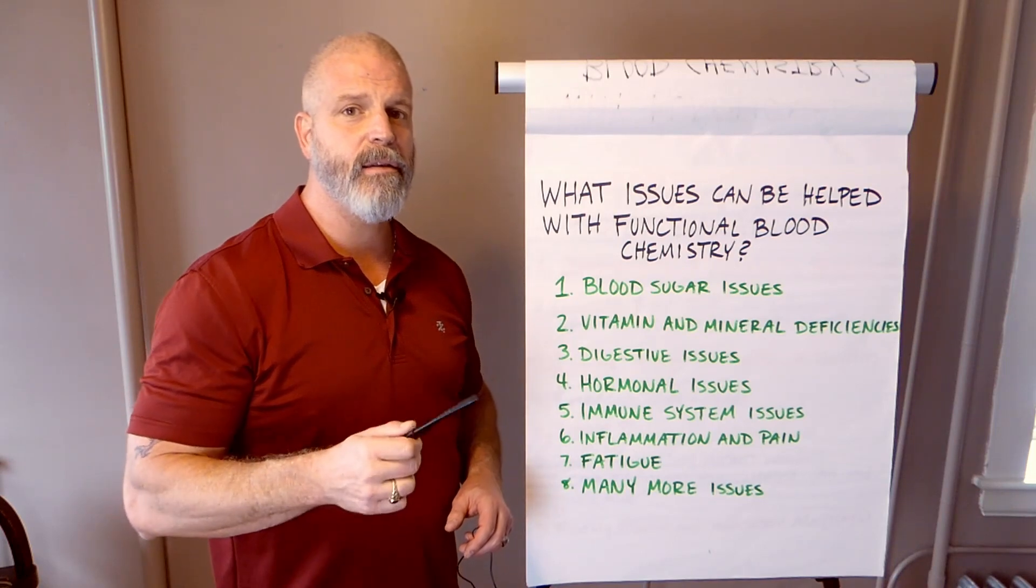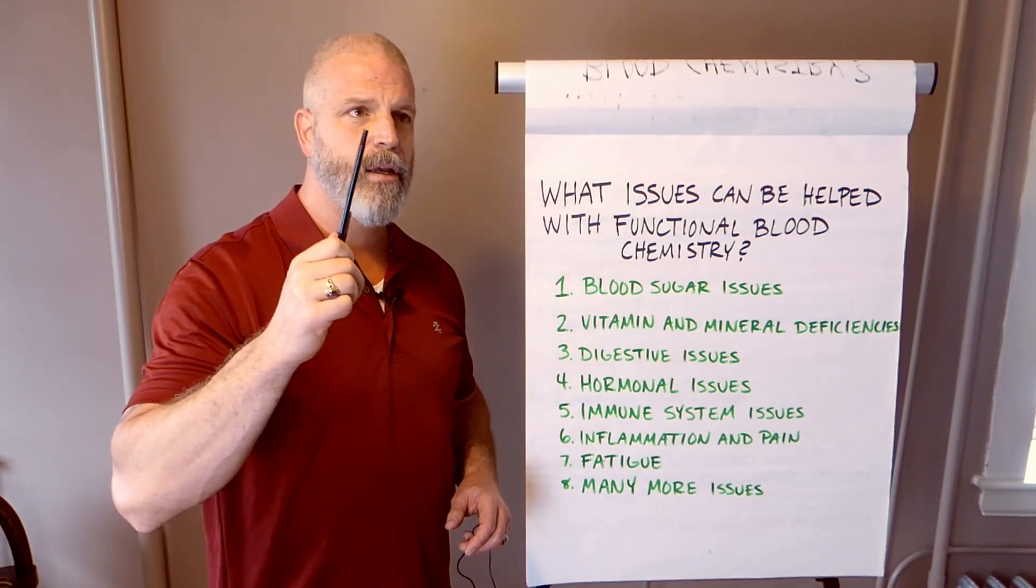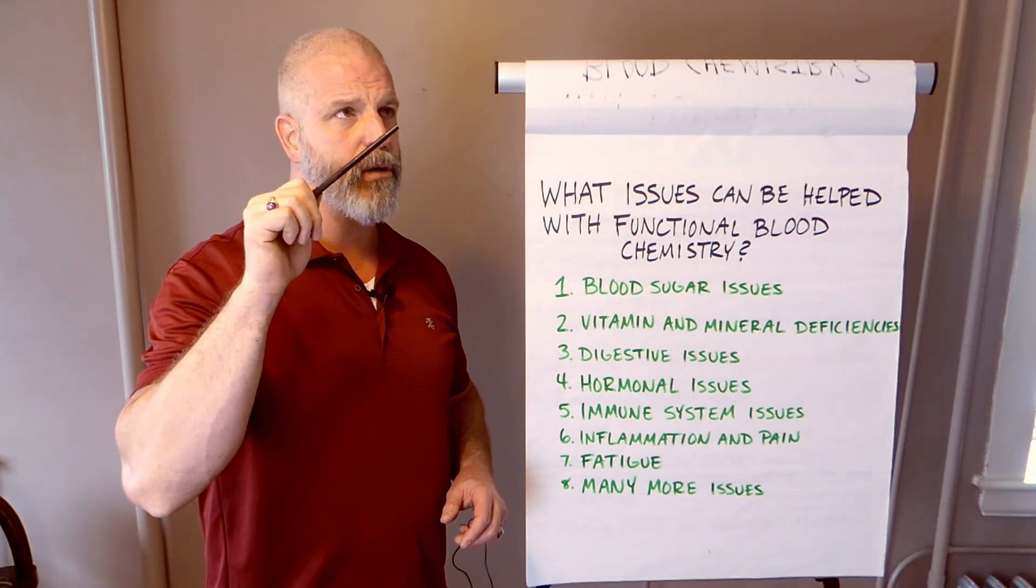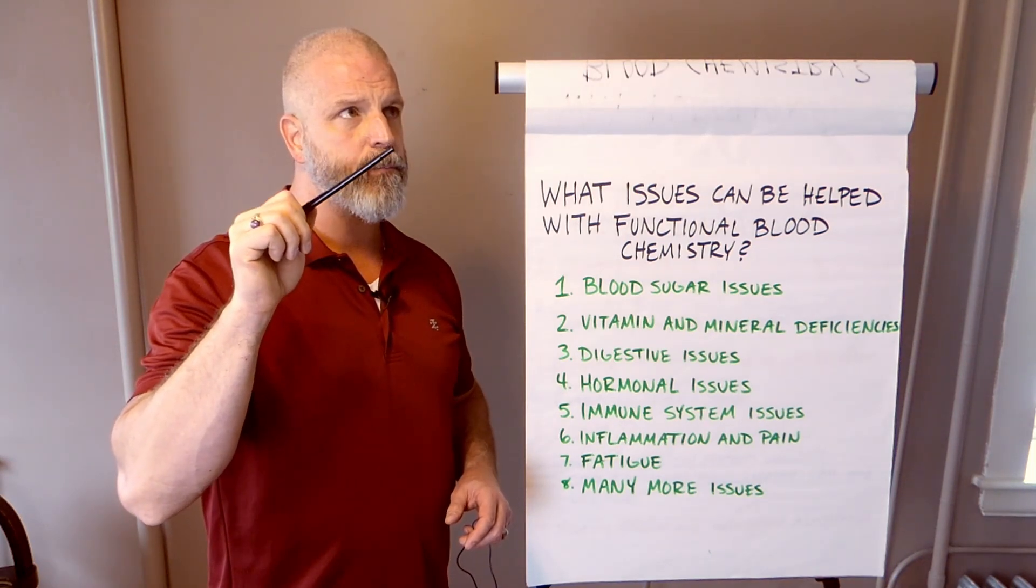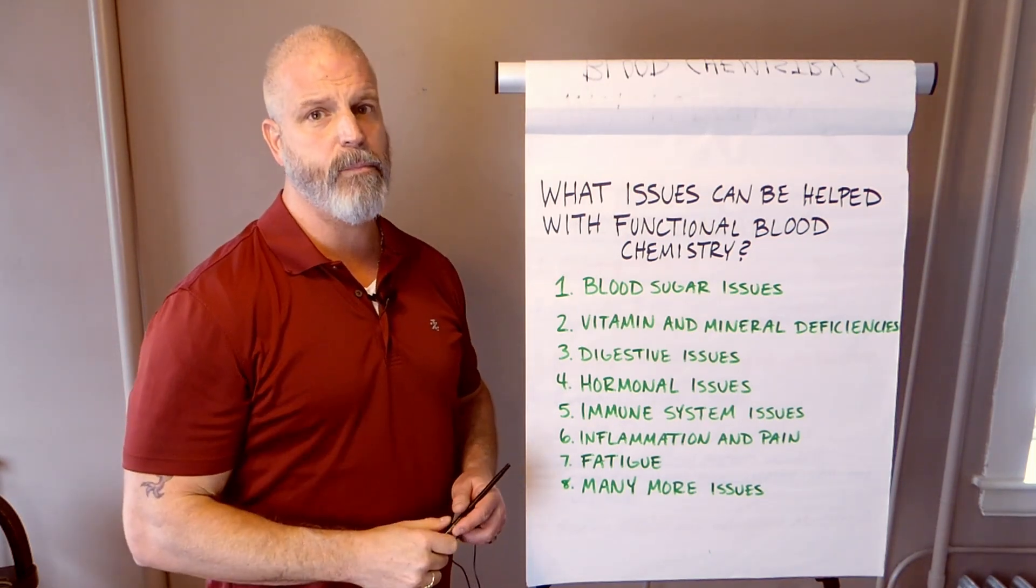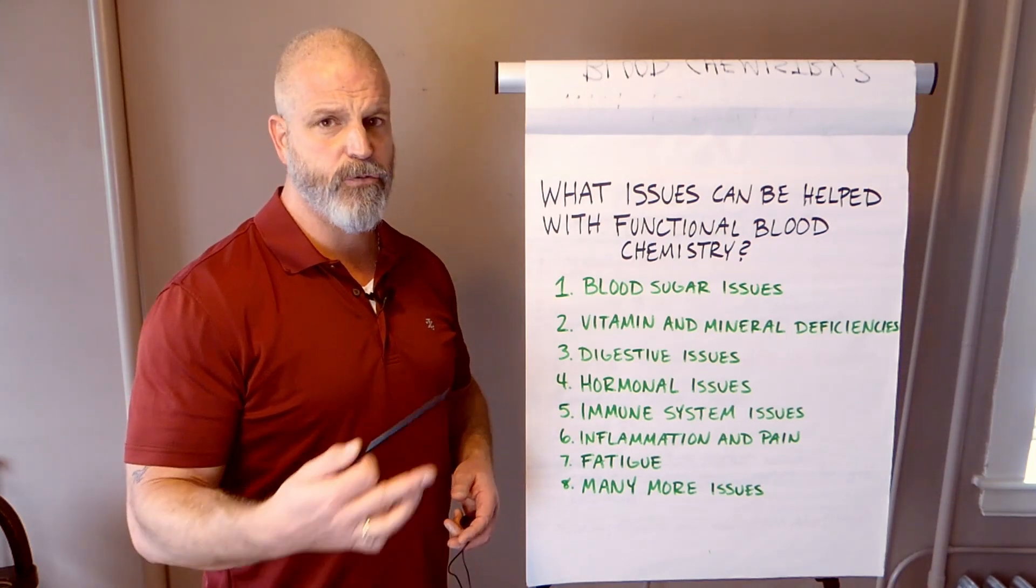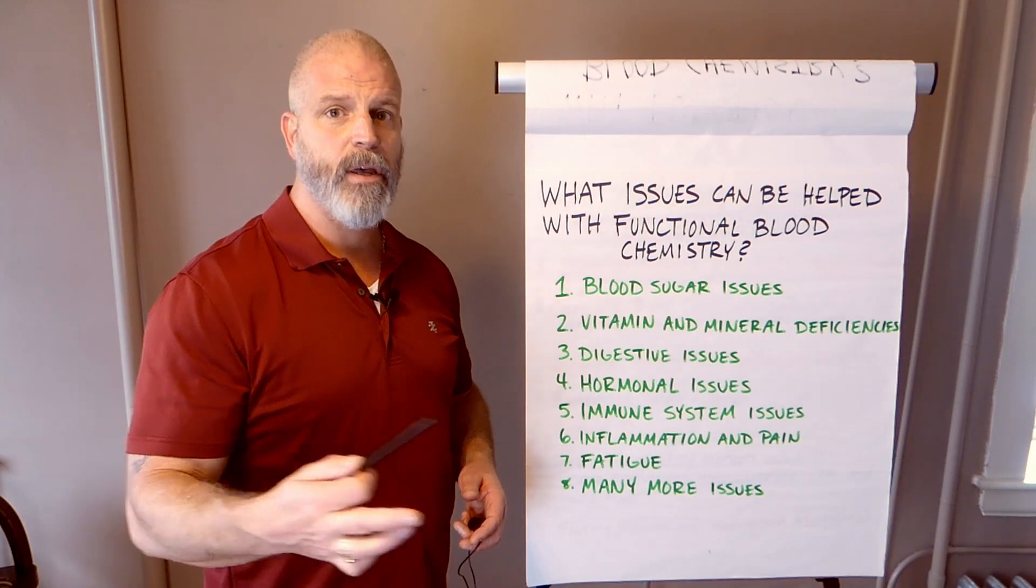Specifically, you will find hidden adrenal, thyroid, and pituitary—one of the glands in your brain—you'll find adrenal, thyroid, pituitary issues all the time on blood tests. And what you can do then is give the person a course of treatment and then do a follow-up if needed.